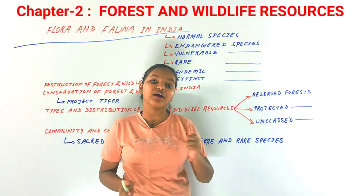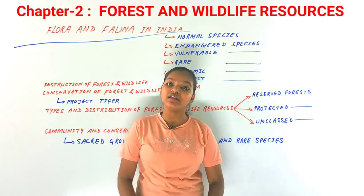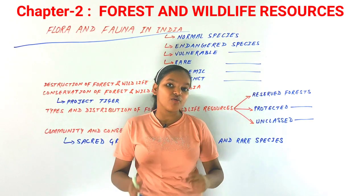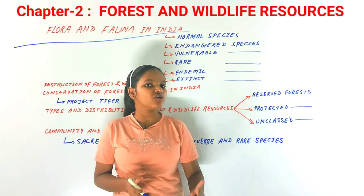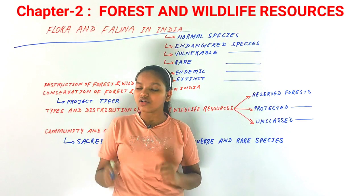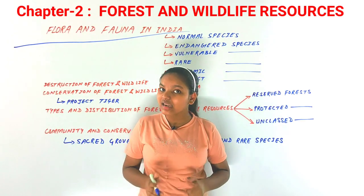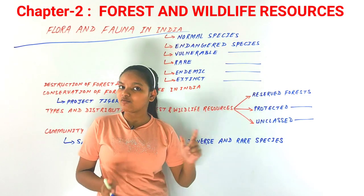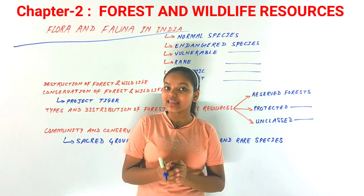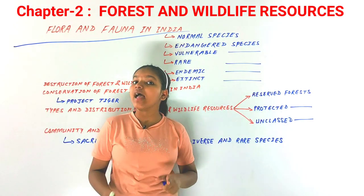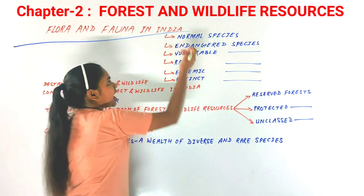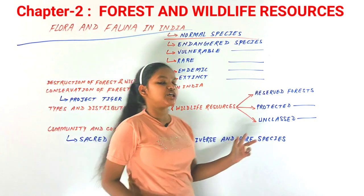We only tend to focus on large animals, but insects and very small animals need protection too. There are many species in our country that need to be protected. The classification of species is done by the IUCN — that is, the International Union for Conservation of Nature and Natural Resources. Let's discuss the different classifications.